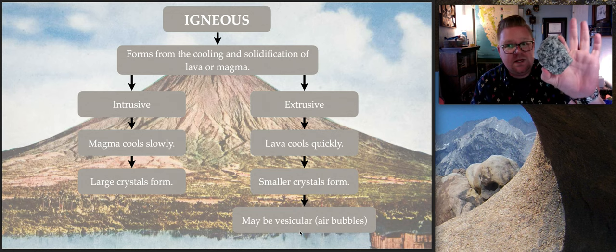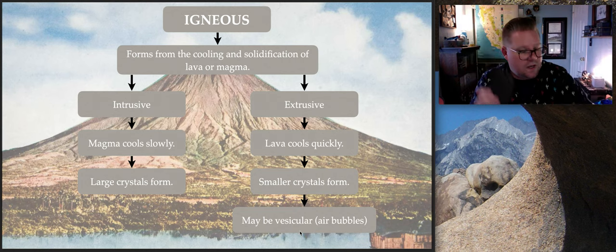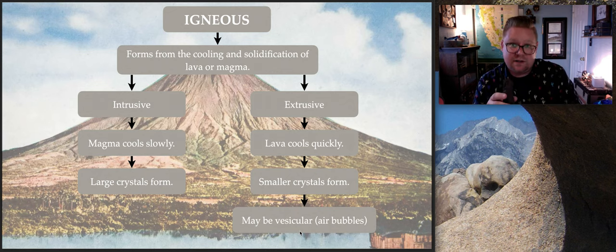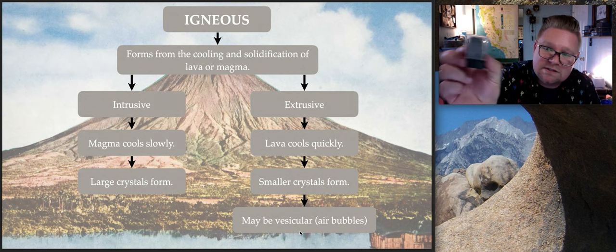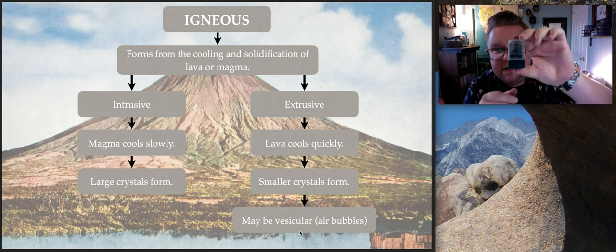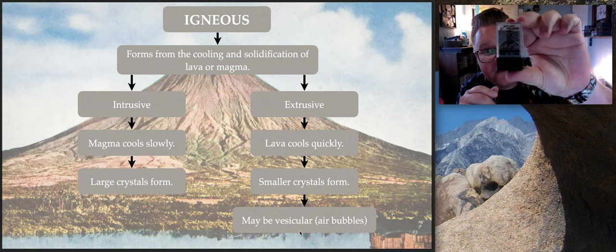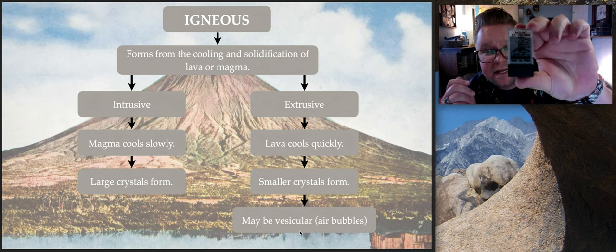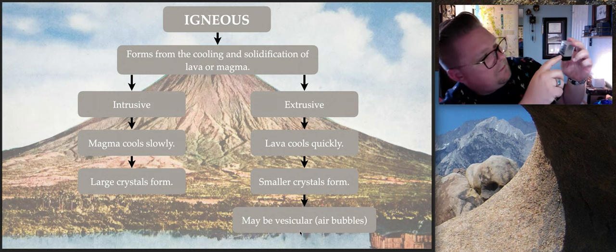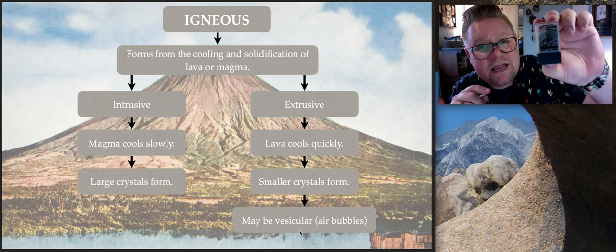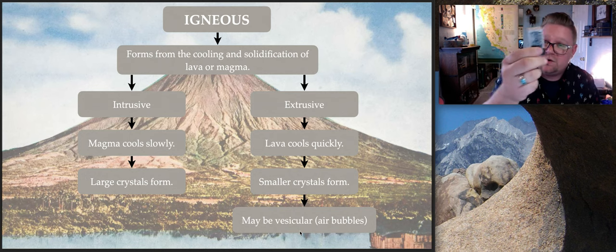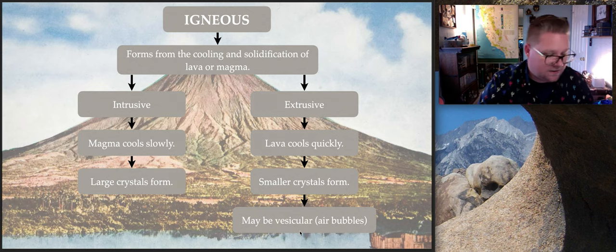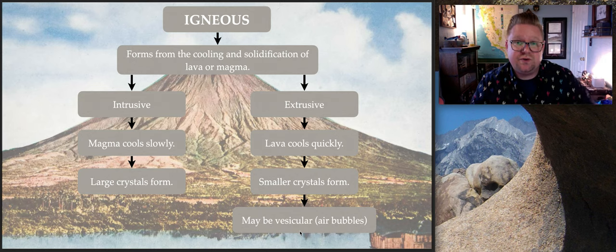A fun fact: since extrusive rocks cool very quickly, another extrusive example is what's in this little gray box. It looks like sand, but this is actually ash that fell on the Earth's surface from the eruption of Mount St. Helens on May 18, 1980 — it's older than you are. This actual volcanic ash deposited after the eruption is also an extrusive igneous rock.